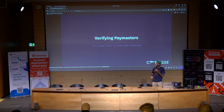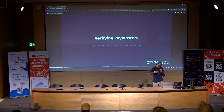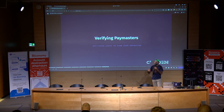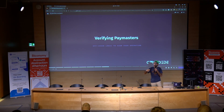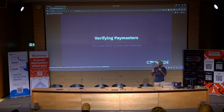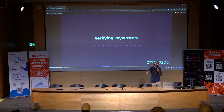The second type of Paymaster is verifying Paymasters. This type has optional logic validation based on conditions. It allows a service to look at a user operation from a wallet and decide: do I sponsor it or not? If the condition is met, it returns the operation with its signature and says it's going to sponsor that transaction.